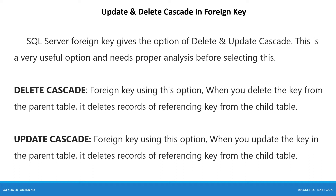Delete cascade: for a foreign key using this option, when you delete a key from the parent table, it deletes the records of the referencing key from the child table. That means if you delete one of the primary key column records from the parent table, all records referencing it in child tables will be automatically deleted. Similarly, in update cascade, when you update the key in the parent table, it updates the records of the referencing key in child tables. That means if you update the primary key field value in the parent table, it will update that value in corresponding child tables automatically.